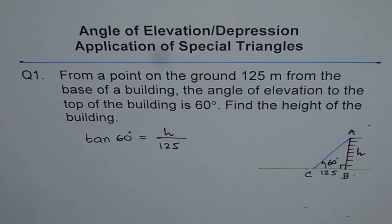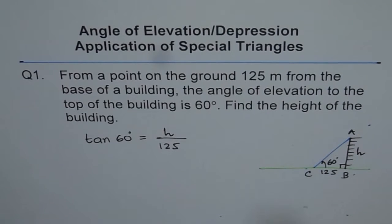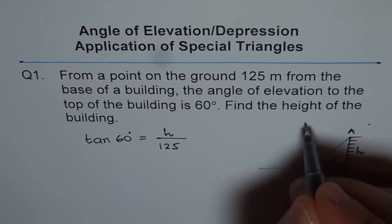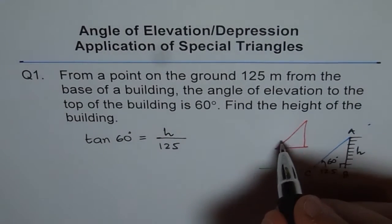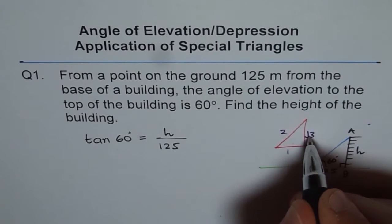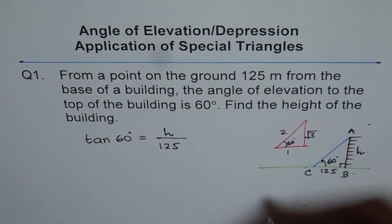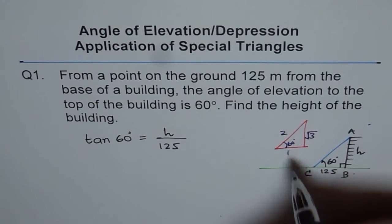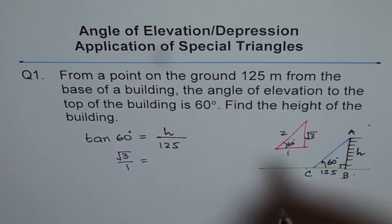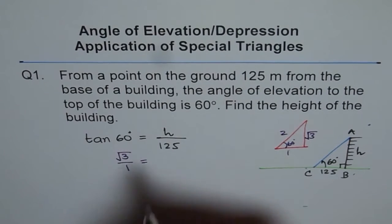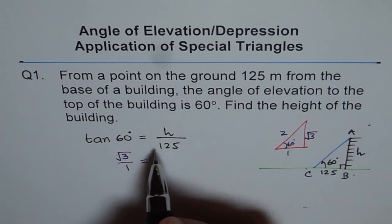We could use a calculator to find tan 60, but here we use the special triangle. The special triangle for 60 degrees has sides 1, 2, and √3, with the 60° angle opposite the √3 side. So tan 60 equals opposite over adjacent, which is √3 over 1, giving us tan 60 = √3.